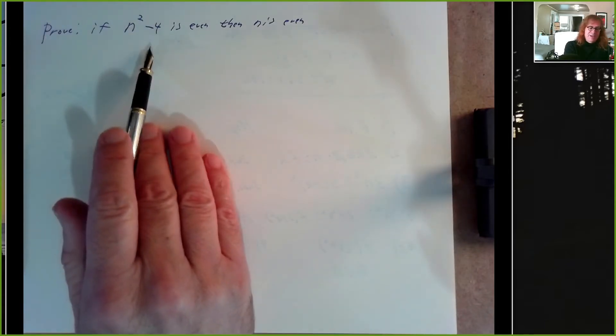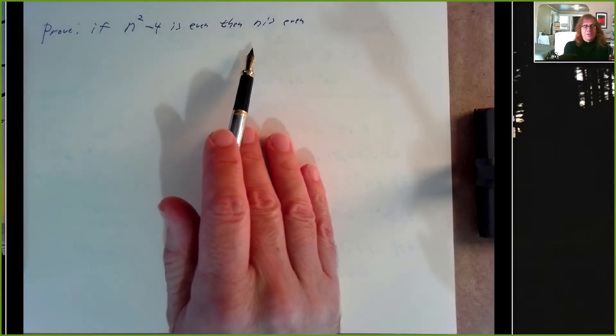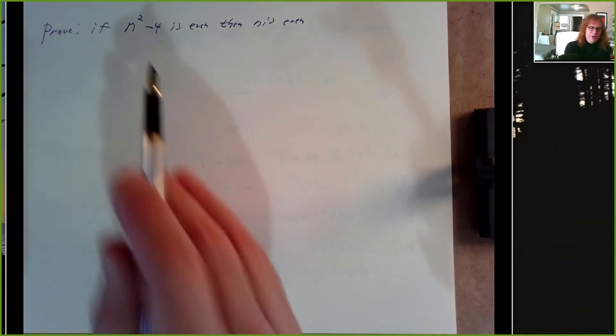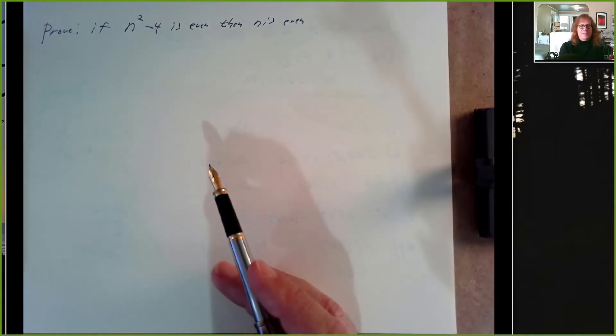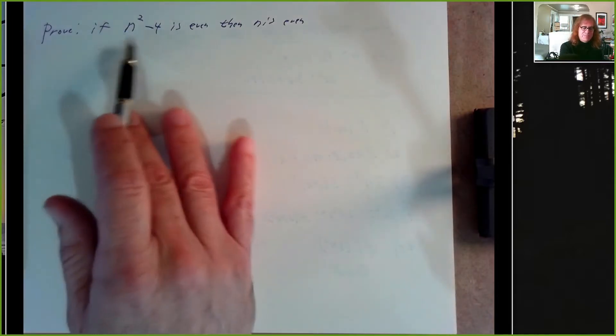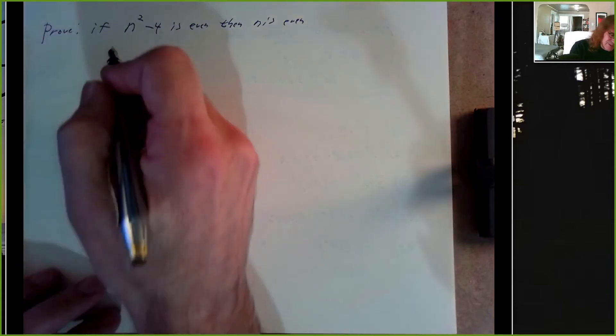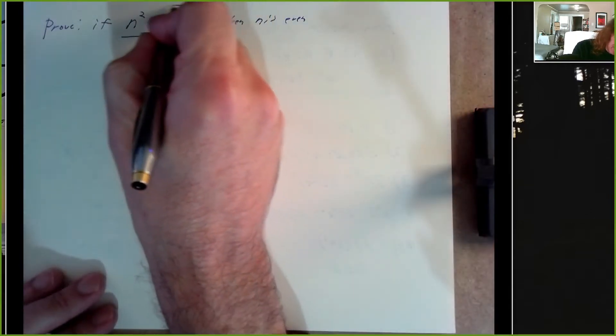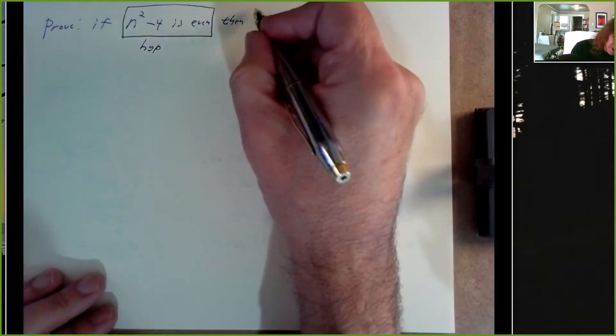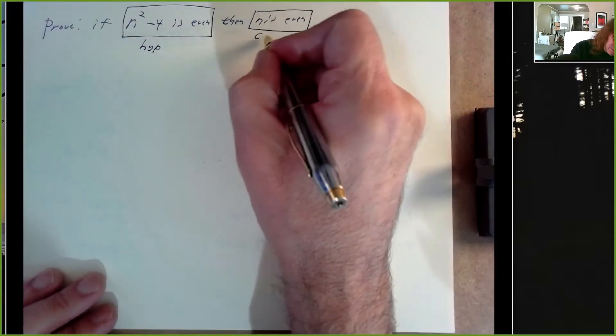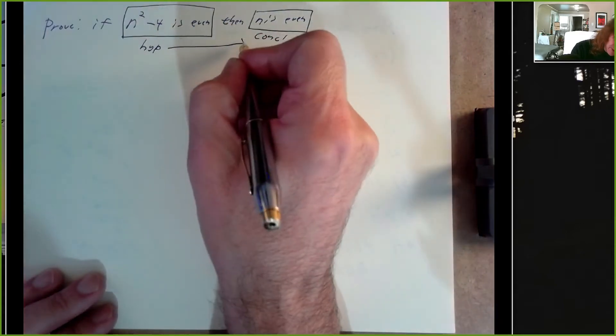Just for fun, if n is 3, then n² is 9 minus 4 is 5 — that's not even, and n is not even. That doesn't prove anything, but it shows this isn't always the case and it does seem to have something to do with whether n² - 4 is even. You have to be really clear what direction we're trying to go: the hypothesis implies the conclusion, so we start by assuming the hypothesis and trying to show the conclusion follows.